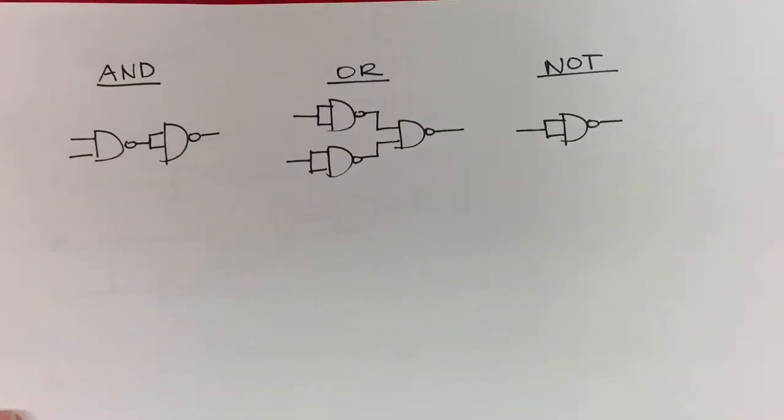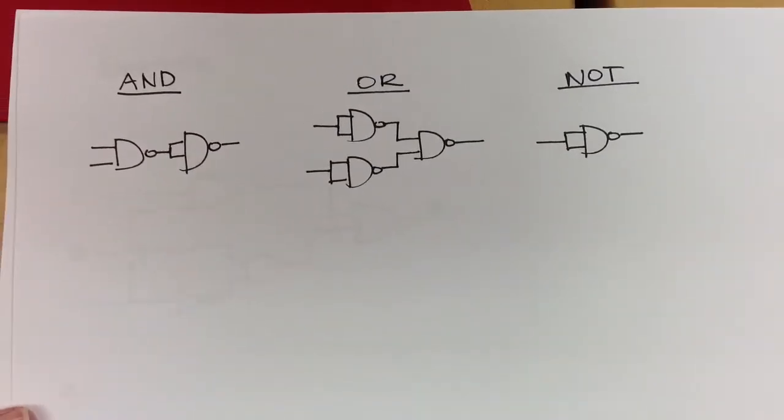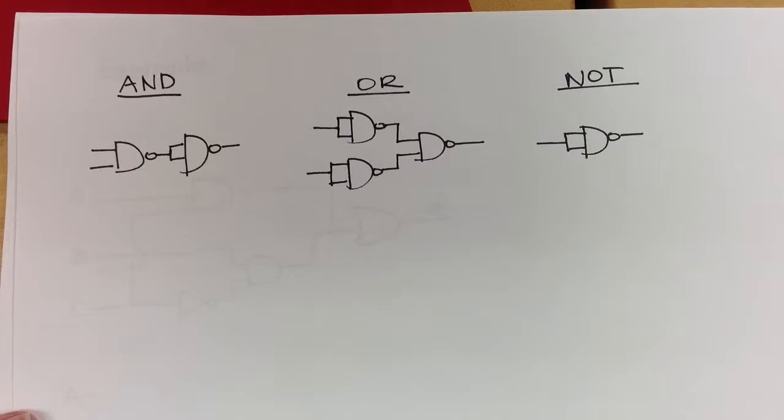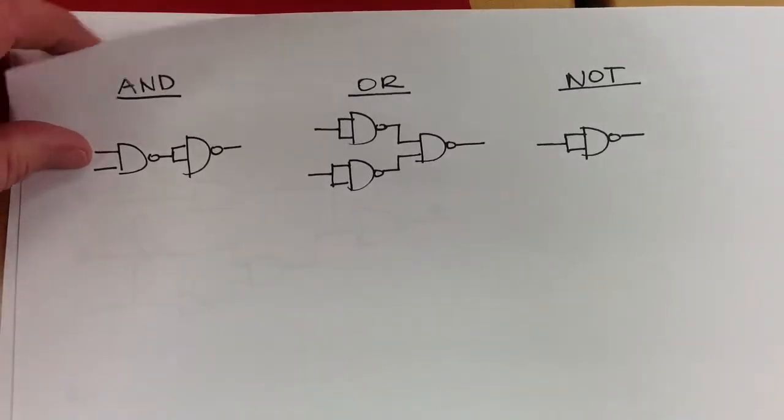Here is a quick reference sheet showing the three combinations of NAND gates we would use to replace NOT, AND, and OR gates.